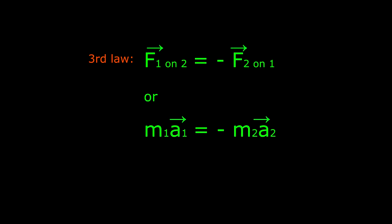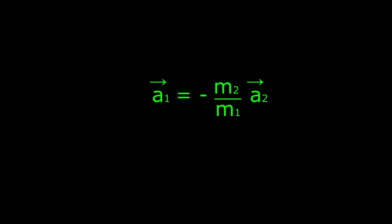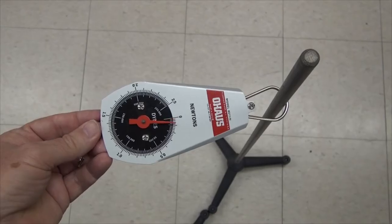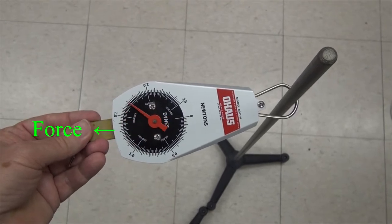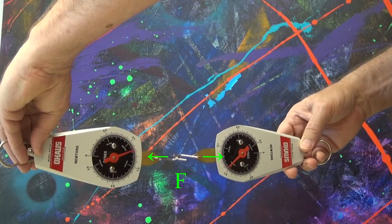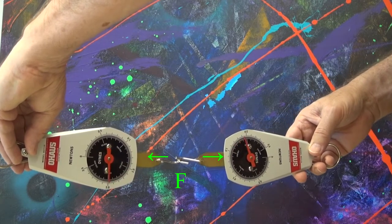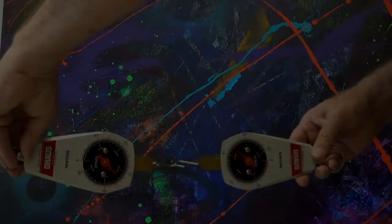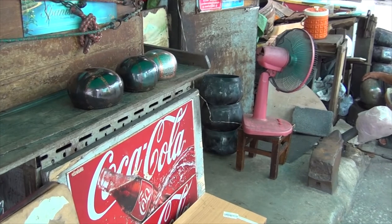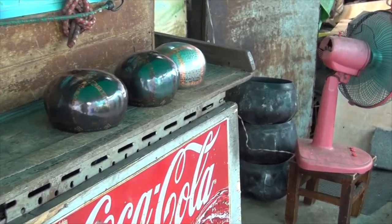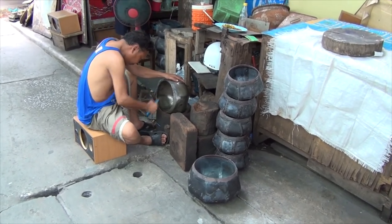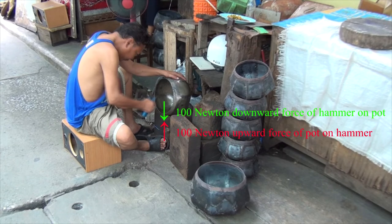Using vectors, we write that the force of object 1 on object 2 is the negative of the force of object 2 on object 1. The forces are equal, but the accelerations are not. If one mass is a million times greater than the other, then its acceleration will be one million times less. This scale measures the force in newtons. These two scales put an equal but opposite force on each other. When the hammer puts a downward force of 100 newtons on the pot, the pot puts an upward force of 100 newtons on the hammer.